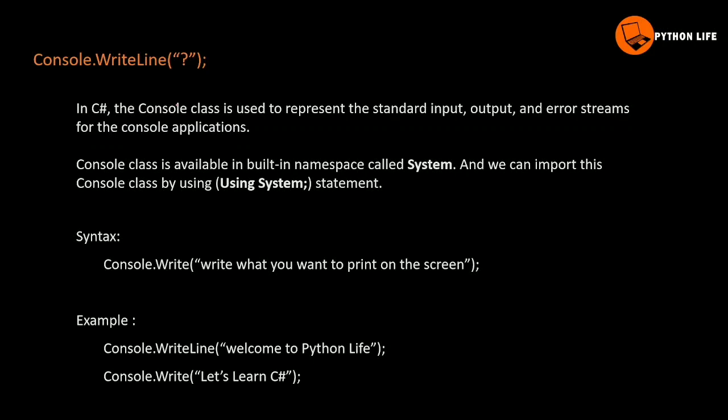Next is Console.WriteLine. You can print a statement. You can print like addition and subtraction. You can print the variables, output, main method, or only input. So Console.WriteLine — if we do a process, the output is output. Console.WriteLine uses brackets and double quotes in the syntax.